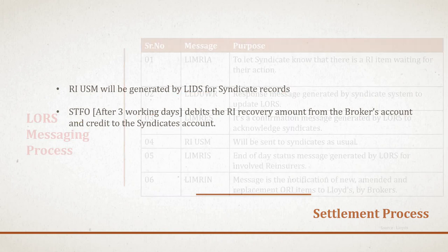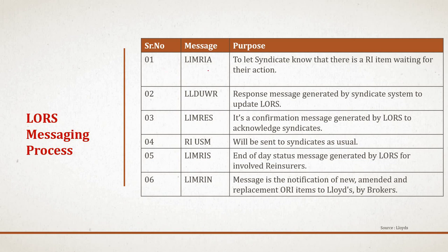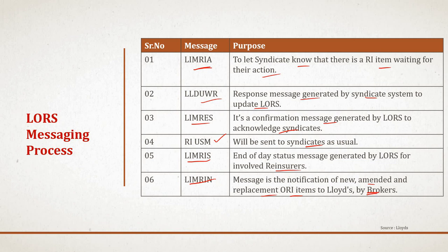There are six important messages in LORS: LIMRIA, LLDUWR, LIMRES, RIUSM, LIMRIS, and LIMRIN. LIMRIA notifies the syndicate that an RI item is waiting for their action. LLDUWR is a response message generated by the syndicate system to update LORS. LIMRES is a confirmation message generated by LORS to acknowledge the syndicate. RIUSM is the normal USM generated by LIDs to inform syndicates as usual. LIMRIS is the end-of-day status message generated by LORS for involved reinsurers. LIMRIN is a notification message when something is amended or replaced in an outward reinsurance item by the broker.